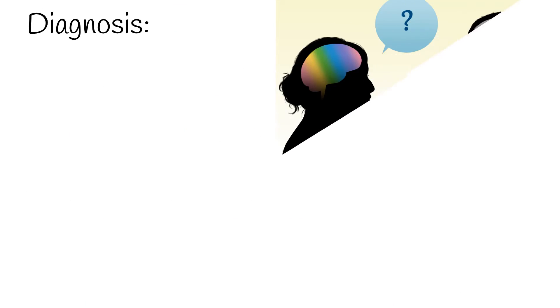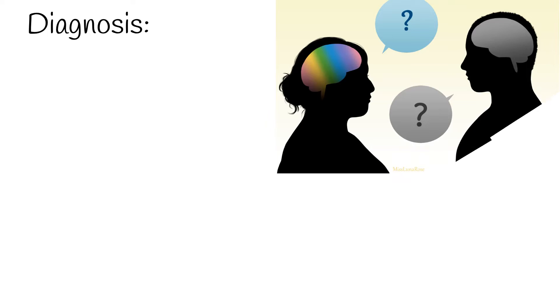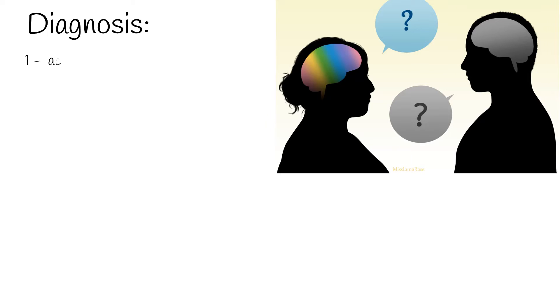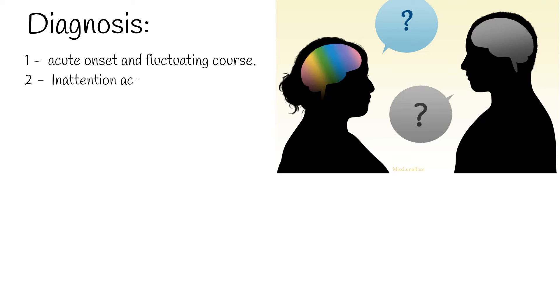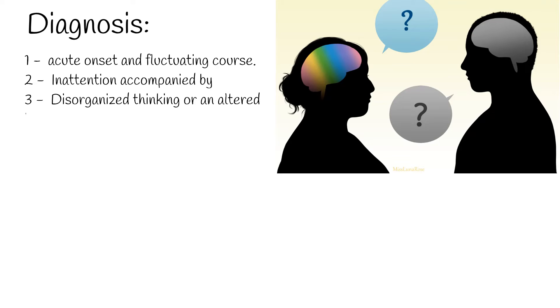Diagnosis of delirium is made by: first, acute onset and fluctuating course; and second, inattention accompanied by either disorganized thinking or an altered level of consciousness.